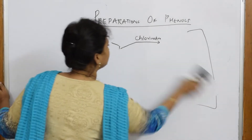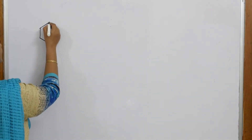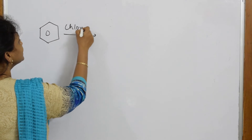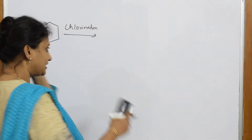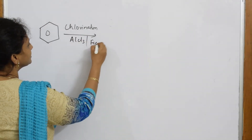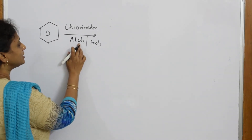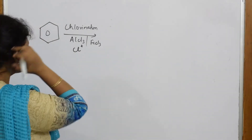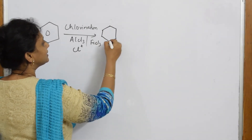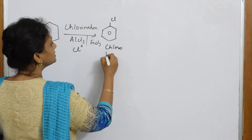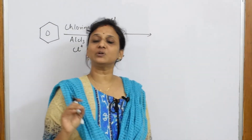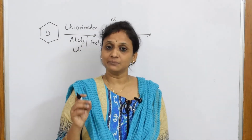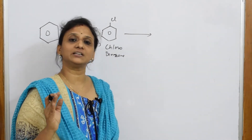Preparation 1: Chlorination. Take benzene as the raw material. For chlorination, we need a reagent to supply the electrophile Cl⁺. Use AlCl₃ or FeCl₃ as the Lewis acid catalyst. The electrophile Cl⁺ attacks the benzene ring to give chlorobenzene. Whenever you see chlorobenzene in a paper, you must perform the Dow's process — I have a separate video on that. Chlorobenzene → Dow's process.